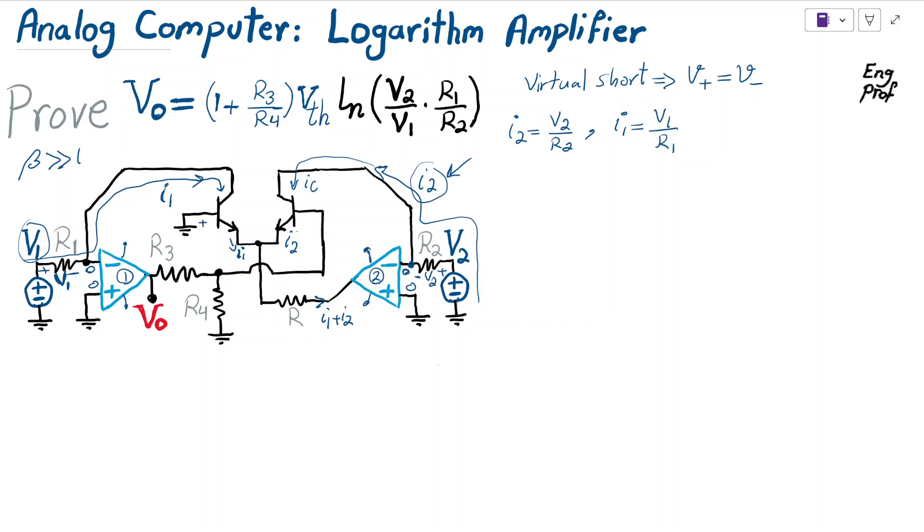Now we can write the relationship between the base-emitter voltages VBE1 and VBE2. If I'm interested in finding Vout, I need to find the voltage of the base of transistor number 2. To find VB2, I can use KVL between VB2 and ground, which is simply VBE2 minus VBE1.